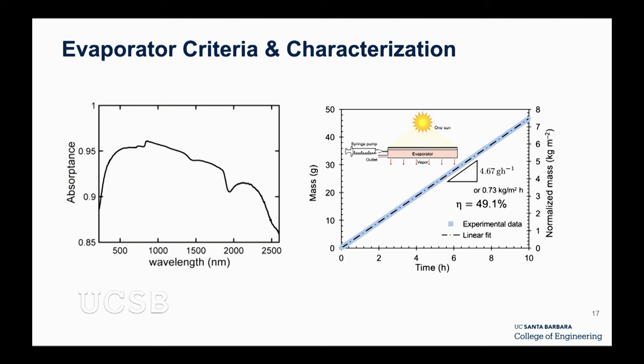The absorptance of our evaporator membrane is between 90% and 95%, absorbing most of the sunlight and turning it to heat. We tested the evaporator under a solar simulator with saltwater running through: we achieved about 49.1% efficiency. The mass of water vapor leaving the system over a 10-hour period is very linear — we're very happy. It works for 10 hours, so how about one week?